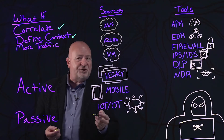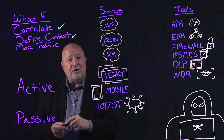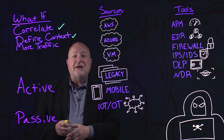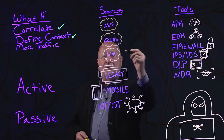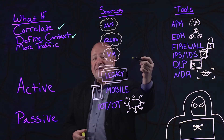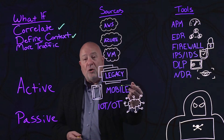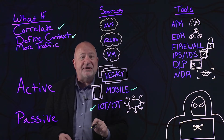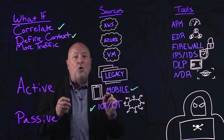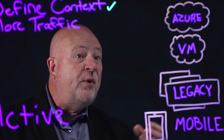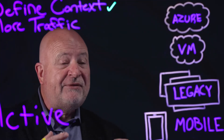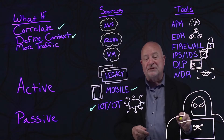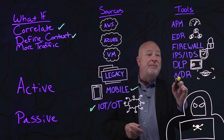It doesn't matter how much traffic you have. With a solution like GigaOne, you can bring in as much traffic from as many sources as you need. Whether it's the cloud, virtualized private environments, legacy environments, or the booming environments we're all working with today around mobile and IoT, we can pull all of that information together, correlate it, and derive intelligence from it — intelligence that can feed into all of your tools to let them do the job better than ever before.